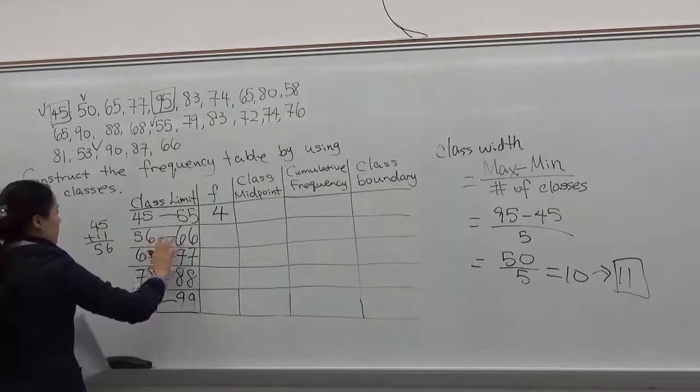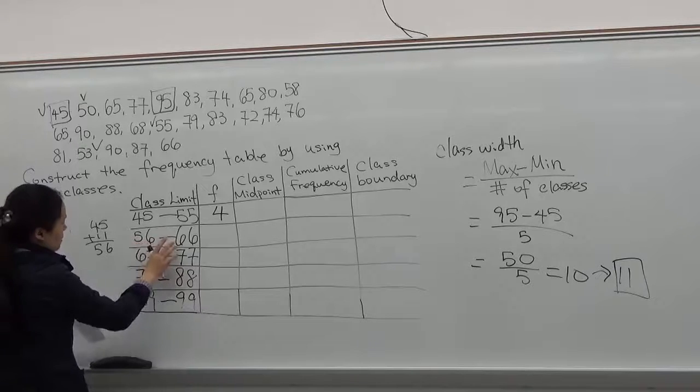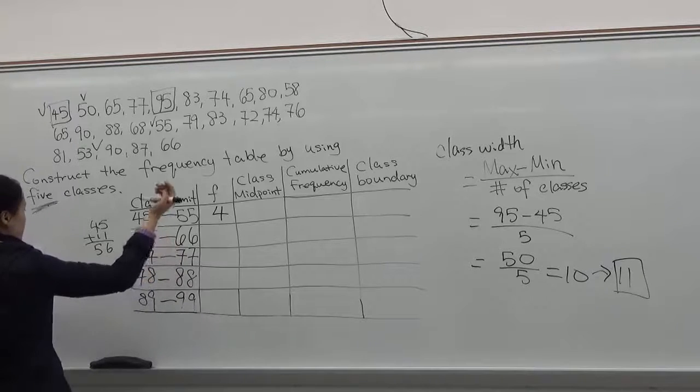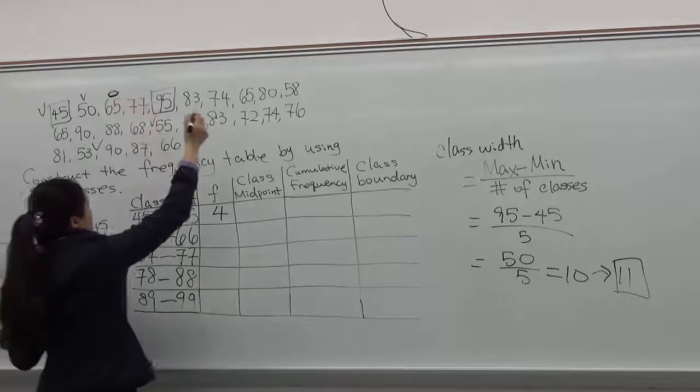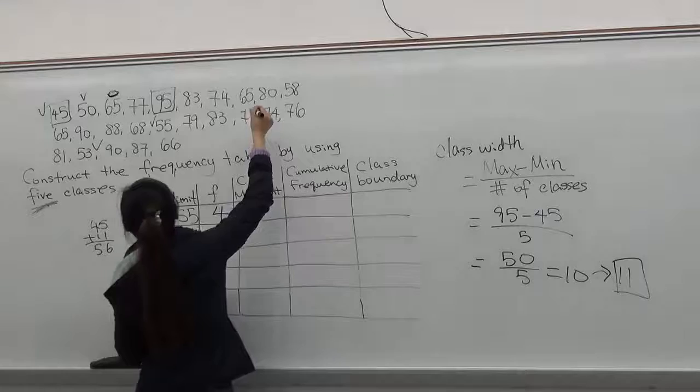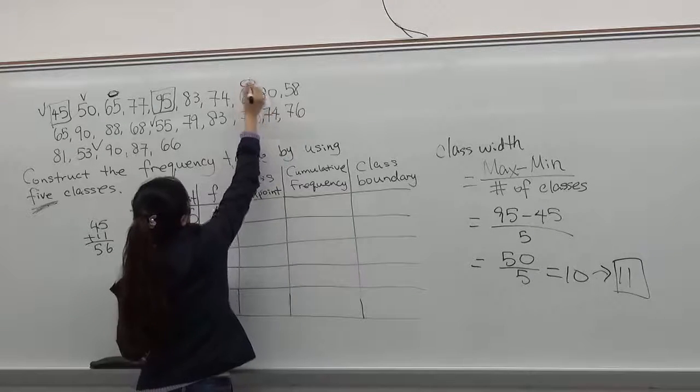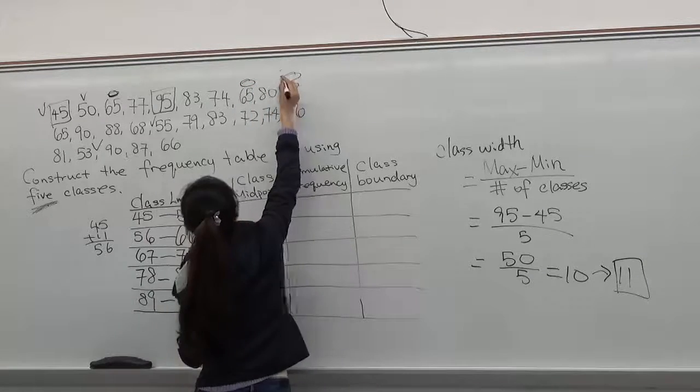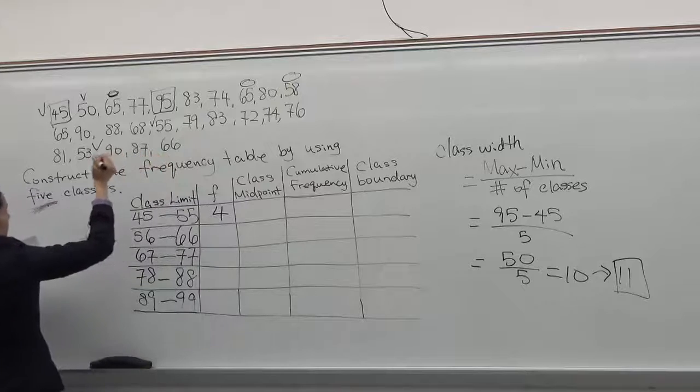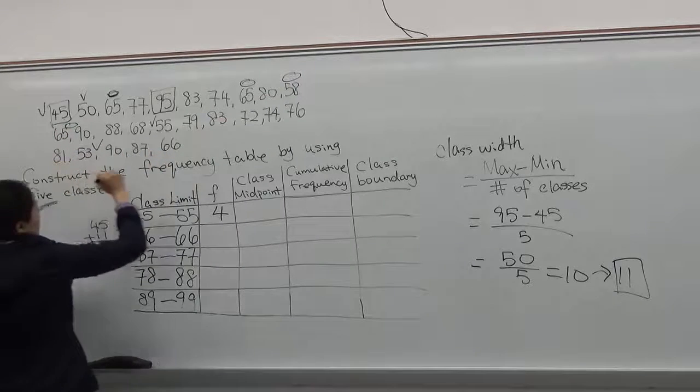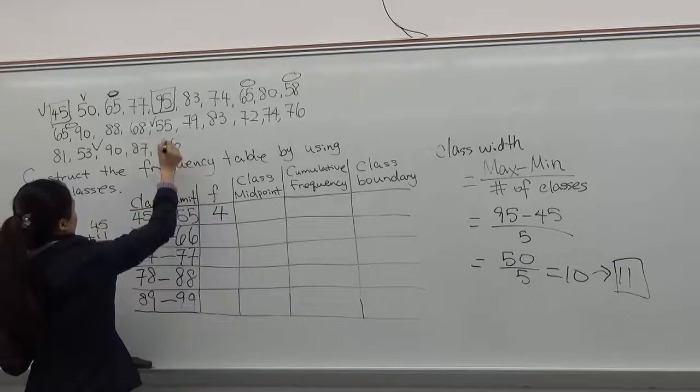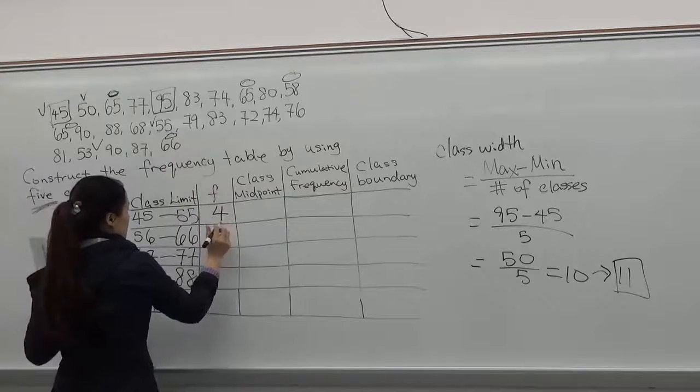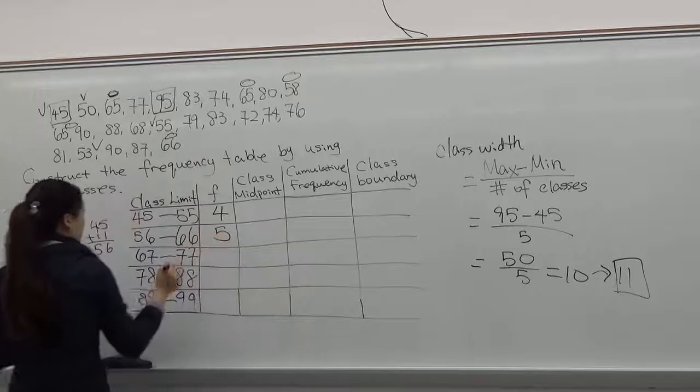Now you have to look for numbers between 56 to 66. 56 to 66, 1, 2, 3, 4, and 5. So you put 5 for your frequency.